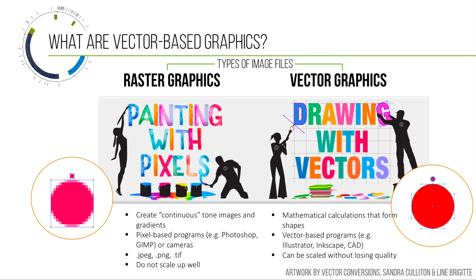Before we dive into Illustrator, I first need to explain what vector-based graphics actually are. There are two main types of image files: raster graphics and vector graphics. Raster graphics are what you're probably familiar with if you take a photo with your phone or if you've ever used Adobe Photoshop. Raster graphics create continuous tone images and gradients — if you zoom in a lot, you'll see pixels. Examples of programs that use raster graphics include Photoshop, GIMP, or photos taken on your camera, and raster file types include JPEGs, PNGs, and TIFFs.